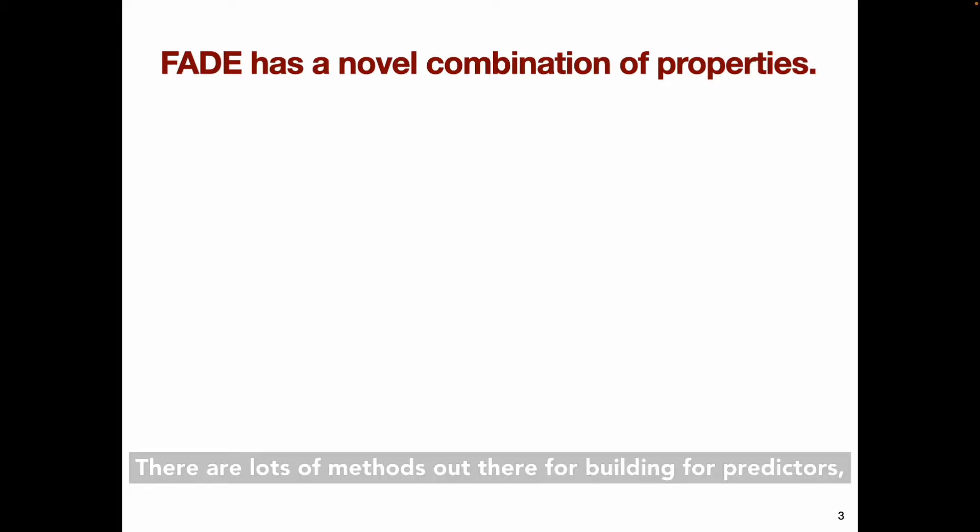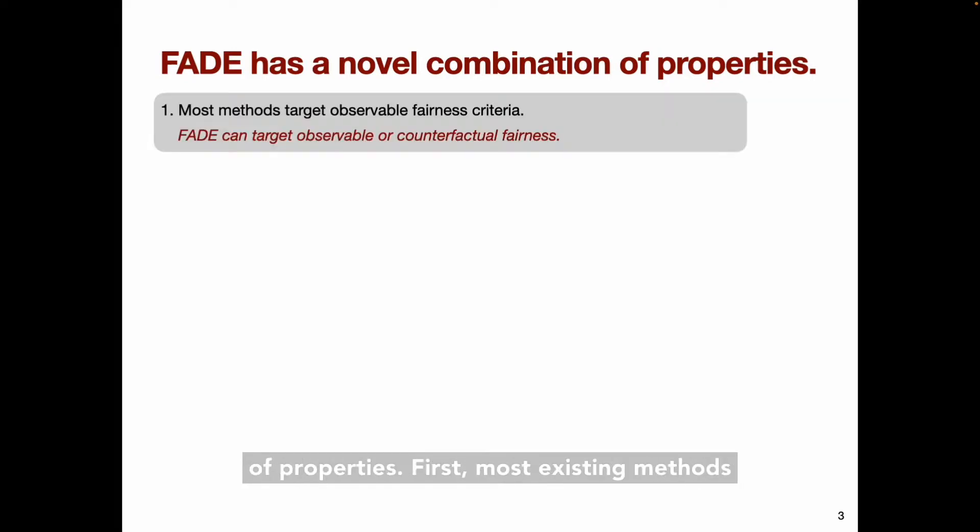There are lots of methods out there for building fair predictors, so why do we need another one? FADE is simple and flexible, and it has a novel combination of properties. First, most existing methods are designed for strictly observable fairness criteria. As mentioned above, FADE can target either observable or counterfactual fairness criteria, and I'll clarify shortly what type of counterfactual criteria I'm referring to.